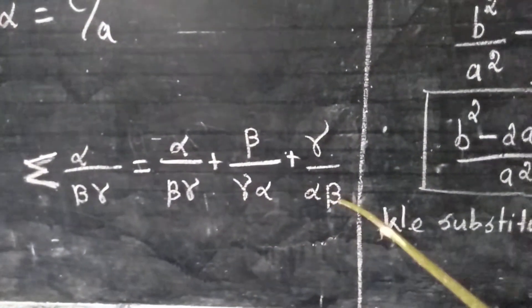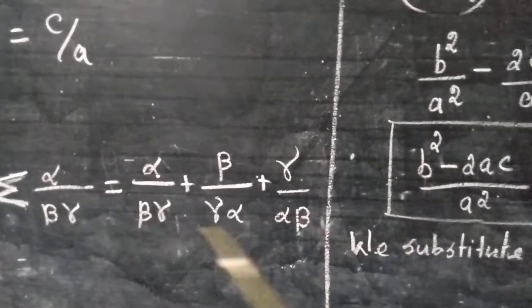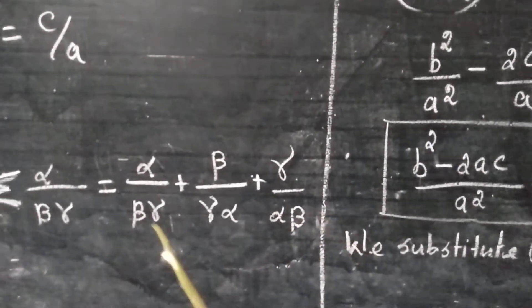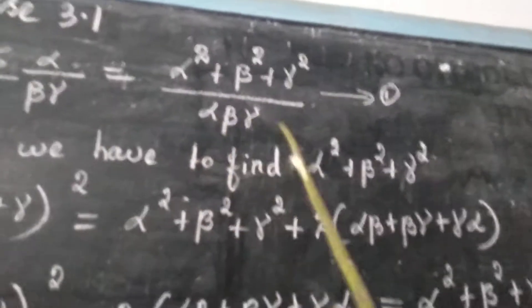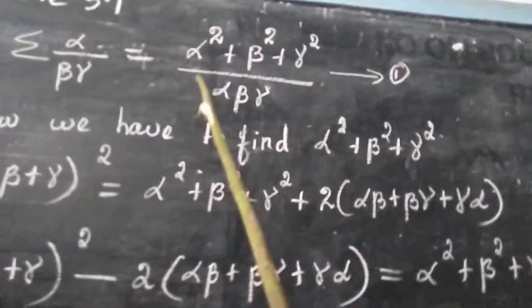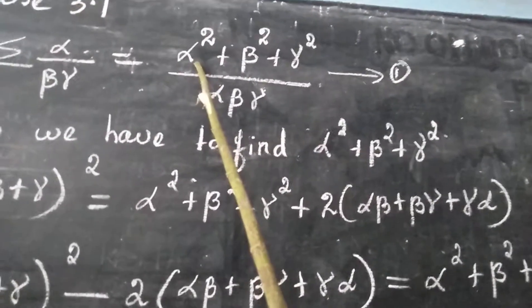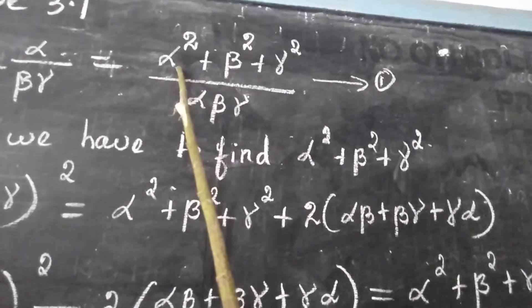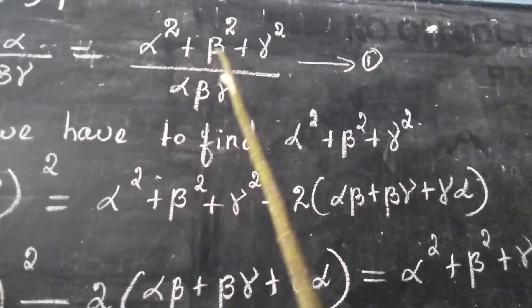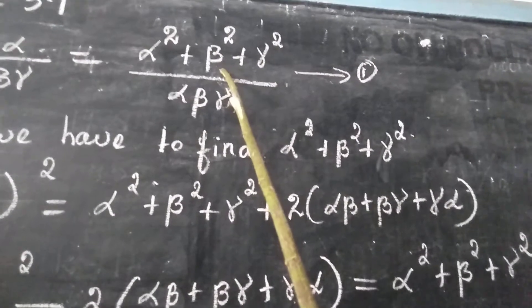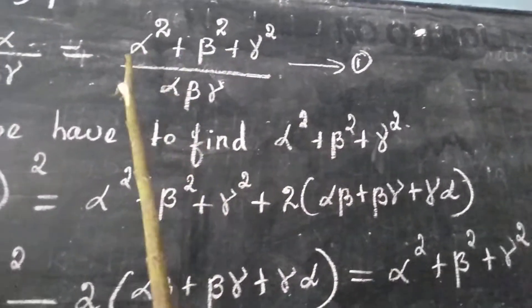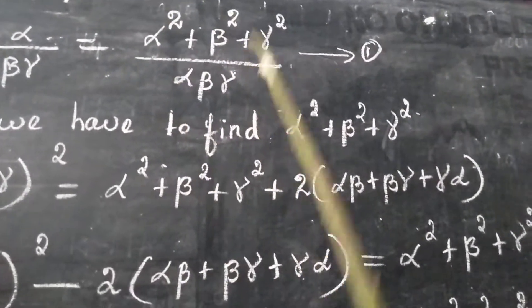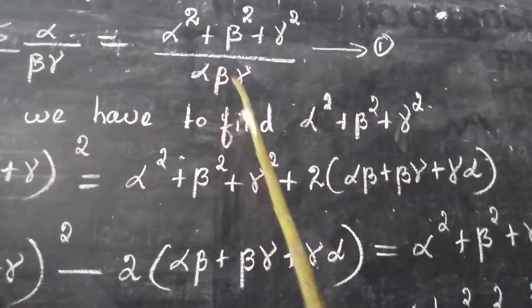Since all these denominators contain alpha, beta, and gamma, we take the LCM as alpha beta gamma. The first term is multiplied by alpha square because alpha is missing there; the second term is multiplied by beta since beta is missing; the third term is multiplied by gamma. That gives us alpha square plus beta square plus gamma square, all divided by alpha beta gamma.